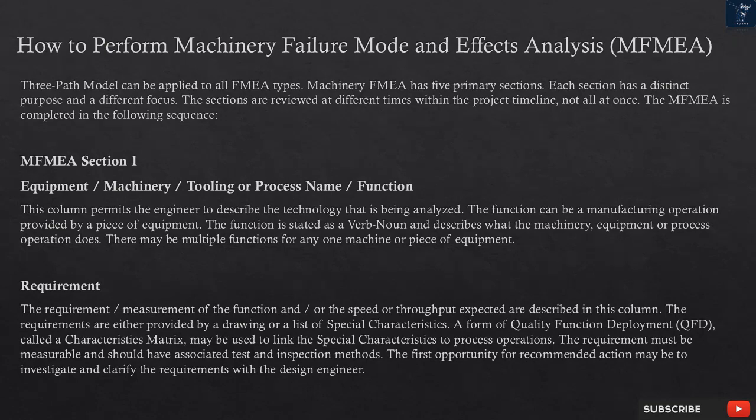There may be multiple functions for any one machine or piece of equipment. Requirement: the requirement or measurement of the function, and the speed or throughput expected, are described in this column. The requirements are either provided by a drawing or a list of special characteristics.